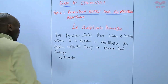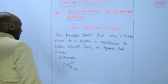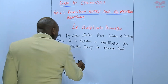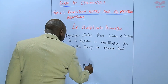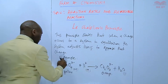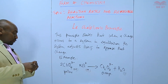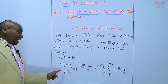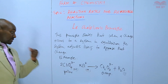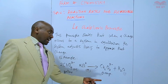We have an example here whereby we have chromate ions, CrO₄²⁻. Those chromate ions are yellow in color. When hydrogen ions are added to the ions, the color changes to orange. The ions at the beginning are chromate ions, yellow in color, and when you add hydrogen ions to those yellow chromate ions, the color changes to orange, because of the formation of dichromate ions, Cr₂O₇²⁻, which are orange.